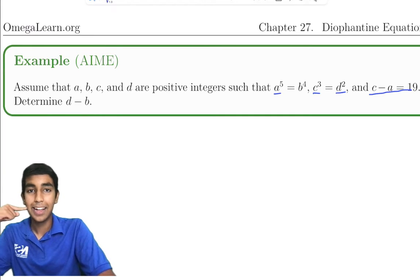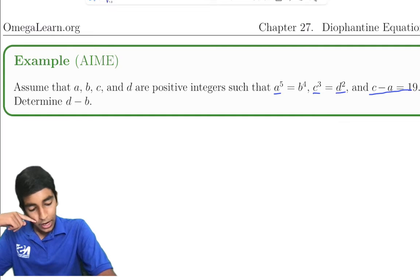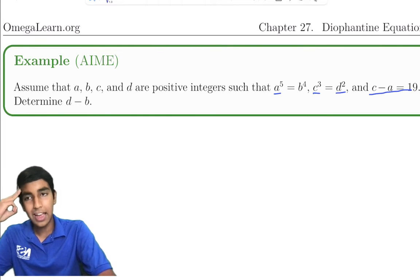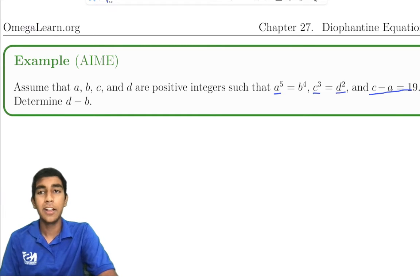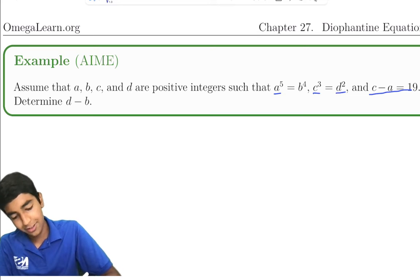What? We have four variables and three equations again. How are we going to do that? This seems way too many. We need to use the integer condition somehow.